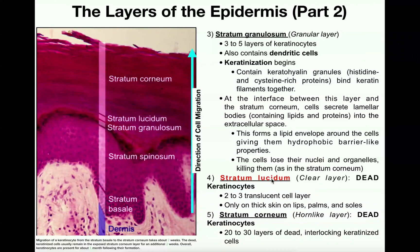In thick skin, the stratum lucidum is the first layer of completely dead keratinocytes. These keratinocytes are dead, clear, and translucent, and the layer consists of only about two to three layers of cells. The key point is that they are dead, and this layer is only present in thick skin.